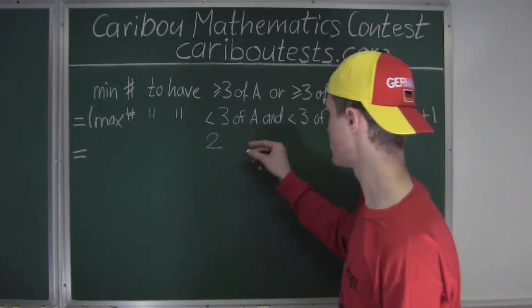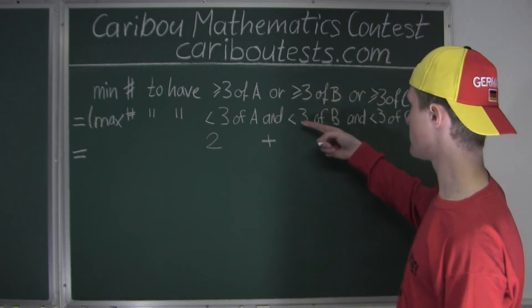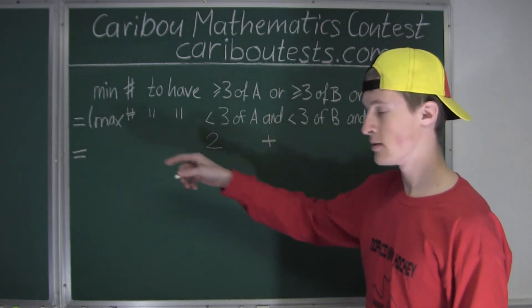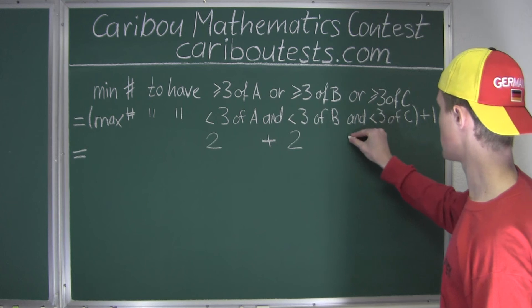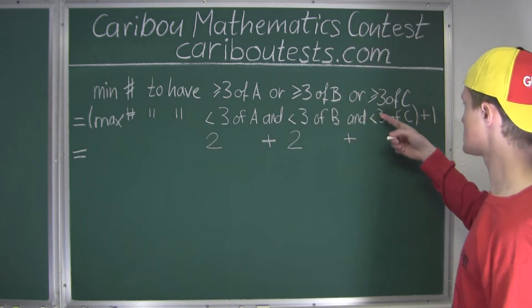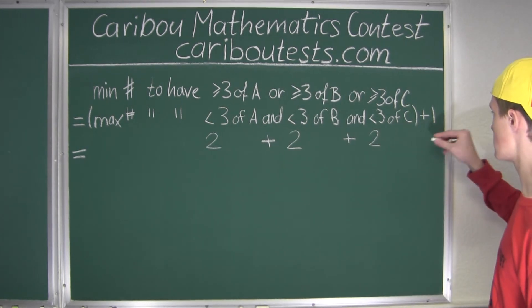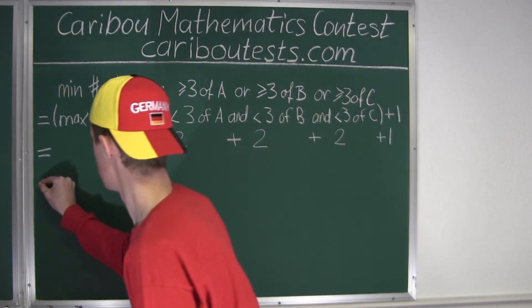So we will have two plus—then we have less than three again, we must have two because we want the maximum. Here again we have AND, so we must have the plus sign. And then less than three—the maximum is two. And finally we still have this plus one at the end.